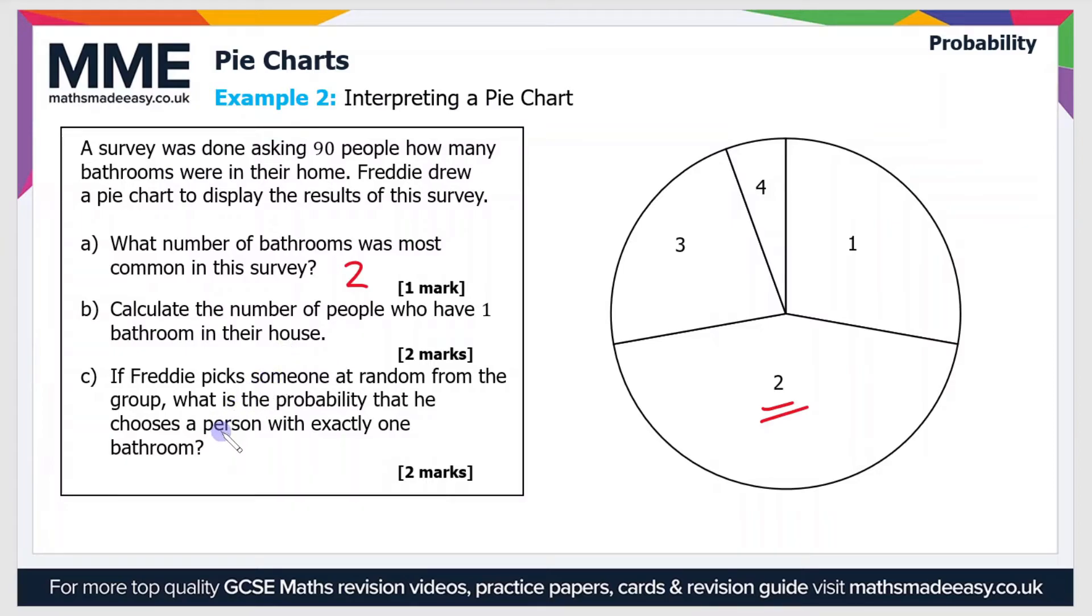Then part B: Calculate the number of people who have one bathroom in their house. Well to do this we're going to need to measure the angle. So that's the angle here in the one category. Now if you use a protractor to measure an angle in an exam, in this particular example I haven't got a protractor but the angle here is 100 degrees.